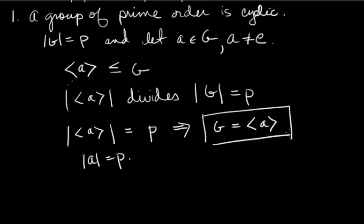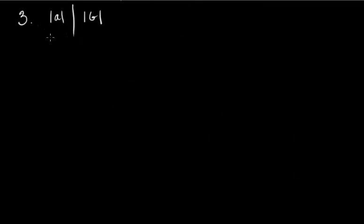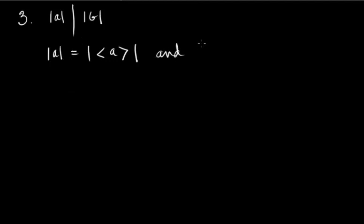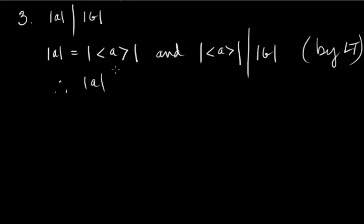Lagrange's theorem is what we use to prove this. Problem three — proving the order of A divides the order of G — is almost an identical proof. The order of A equals the order of the cyclic subgroup generated by A. By Lagrange's theorem, the order of that cyclic subgroup divides the order of G. Therefore the order of A divides the order of G. The order of any element is the number of elements in its generated cyclic subgroup.